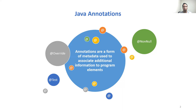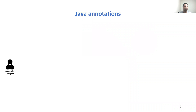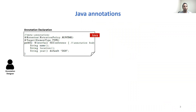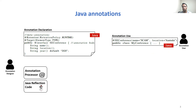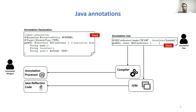So how do these annotations work behind the scenes? First, an annotation designer declares an annotation. An annotation declaration is similar to an interface declaration, except the keyword interface is preceded by the @ symbol. An annotation declaration also contains element declarations and some meta-annotations. After declaring the annotation, the annotation designer writes the annotation processor and the Java reflection code. Then the annotation user uses the declared annotation, and then the compiler or Java Virtual Machine checks and processes the used annotation using the annotation processor or Java reflection code.